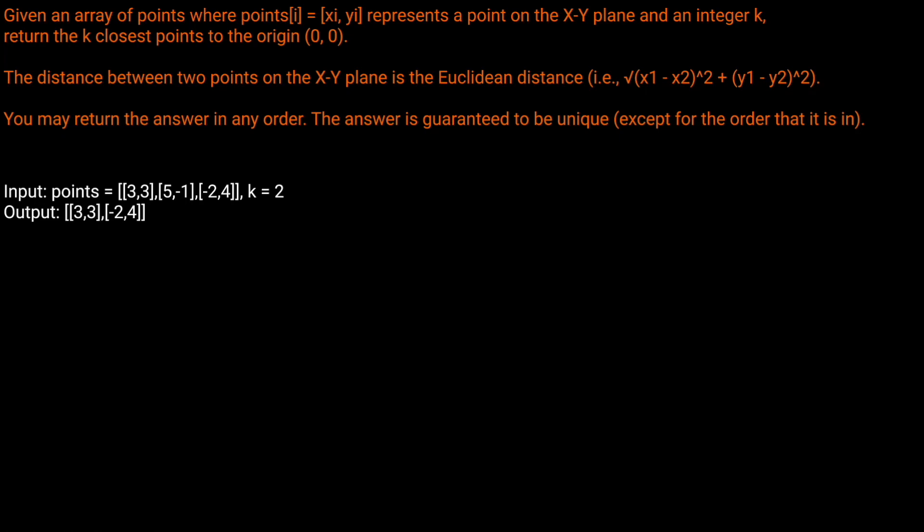Given an array of points where points[i] equals (xi, yi) represents a point on the XY plane and an integer k, return the k closest points to the origin (0, 0). The distance between two points in the XY plane is the Euclidean distance, i.e. the square root of (x1 minus x2) squared plus (y1 minus y2) squared. You may return the answer in any order, and the answer is guaranteed to be unique except for the order.